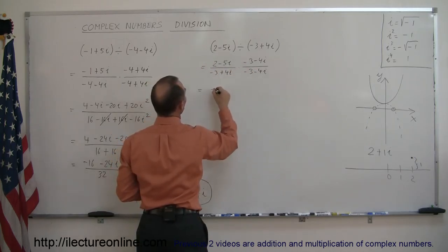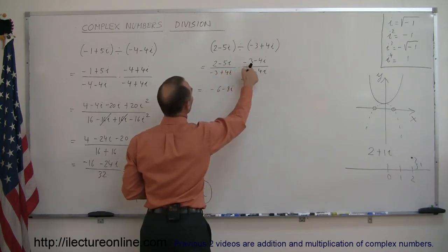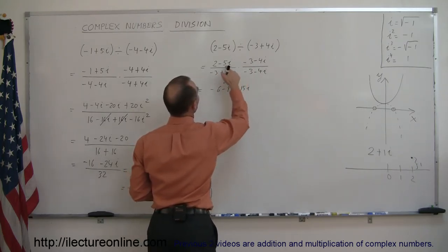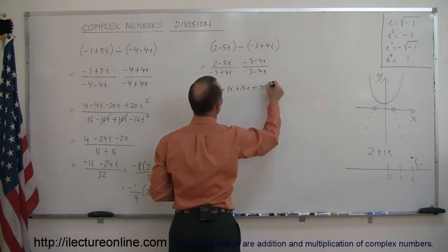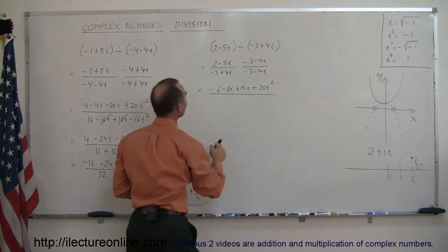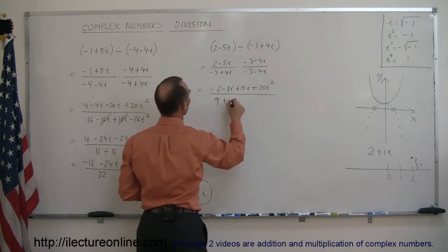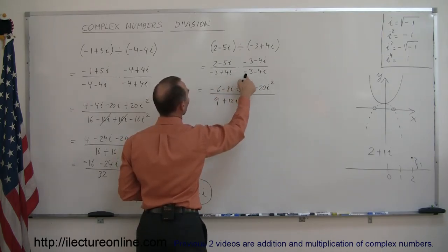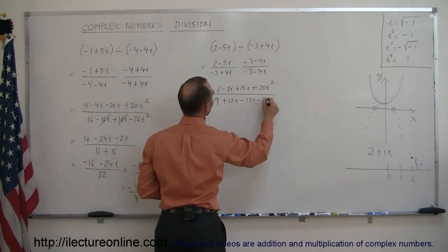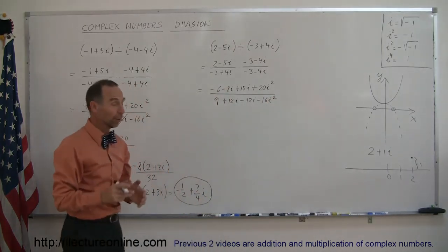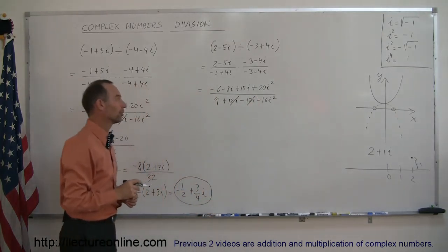Multiplying the numerator: 2 times minus 3 is minus 6; 2 times minus 4i is minus 8i; minus 5i times minus 3 is plus 15i; and minus 5i times minus 4i is plus 20i squared — don't forget the squared. Divided by: minus 3 times minus 3 is positive 9; minus 3 times minus 4i is positive 12i; 4i times minus 3 is minus 12i; and 4i times negative 4i is negative 16i squared. Notice again that the two imaginary terms in the denominator drop out.